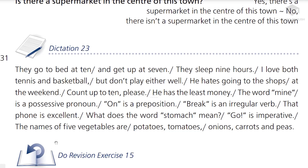Dictation 23. They go to bed at 10 and get up at 7; they sleep 9 hours. I love both tennis and basketball but don't play either well. He hates going to the shops at the weekend. Count up to 10 please. He has the least money. The word 'mine' is a possessive pronoun. 'On' is a preposition. 'Break' is an irregular verb. That phone is excellent. What does the word 'stomach' mean?